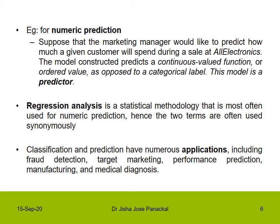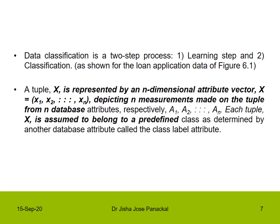Regression analysis, or numeric prediction, are used synonymously. Classification and prediction have numerous applications including fraud detection, target marketing, performance prediction, manufacturing, and medical diagnosis. Classification is a two-step process which includes a learning step and also a classification step. We will see this by example in the next slide.